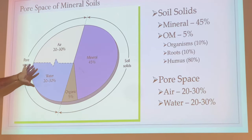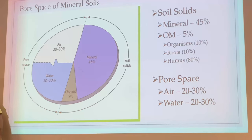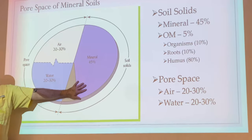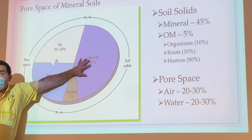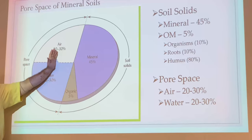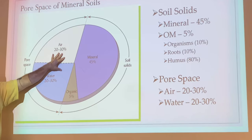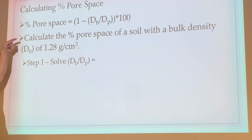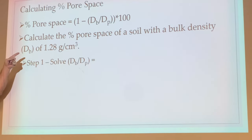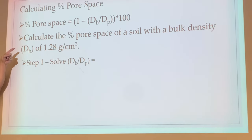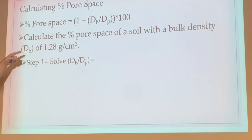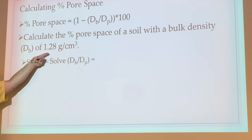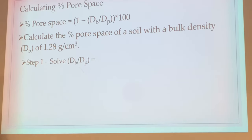Now we're talking about pore space. We've put the soil sample in the oven and removed the water, so now whatever isn't mineral is going to represent pore space. The bulk density reflects just the mineral and air — there's no water making the sample heavier anymore. The way we calculate pore space: step one, solve bulk density divided by particle density. I set up the homework specifically for you to find bulk density first.